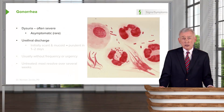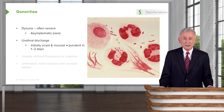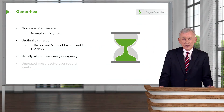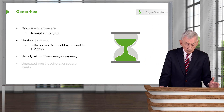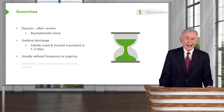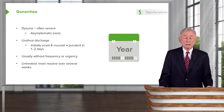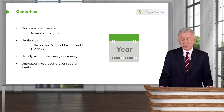The urethral discharge may start out as scant and mucoid, but within one to two days it is frank pus. Interestingly, in contrast to urinary tract infections, there is not the urgency to urinate, and urinary frequency is not common like it is in a UTI. If patients don't seek treatment, this syndrome will resolve in several weeks.